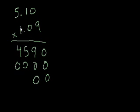Put two 0's here. And then 1 times 0 is 0. 1 times 1 is 1. And 1 times 5 is 5.